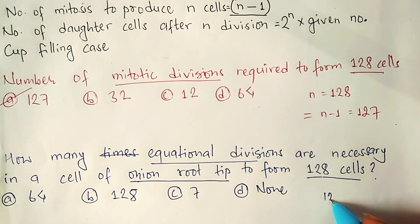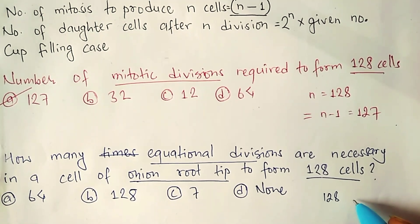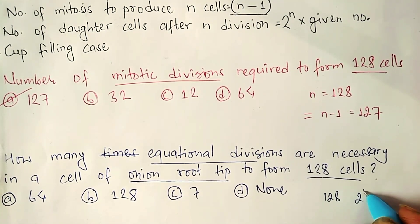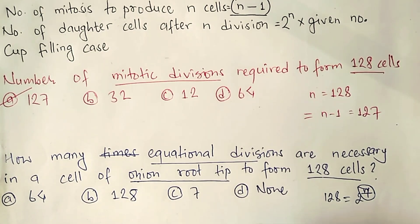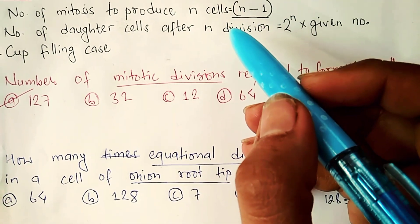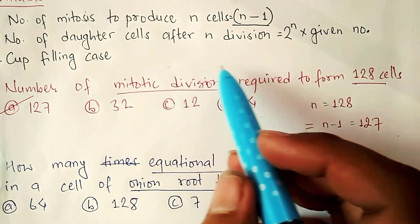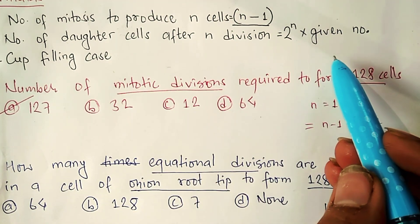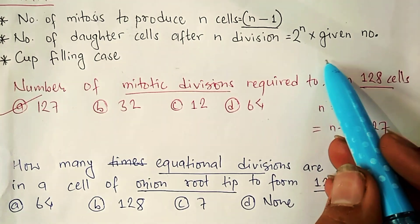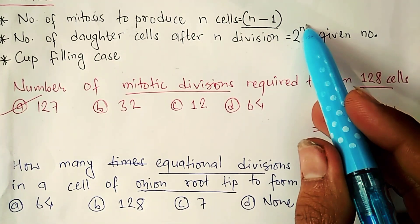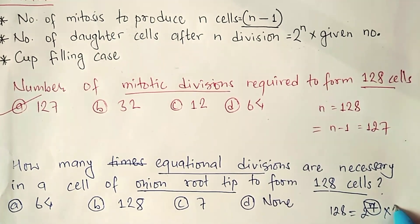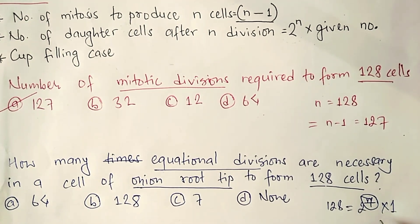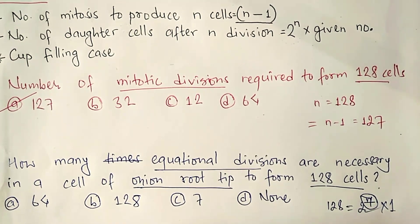Taking 128, it is 2 to the power 7. Our formula is 2 to the power x into given number. The given number is 1, so our correct answer is 7. Seven equational divisions are required.